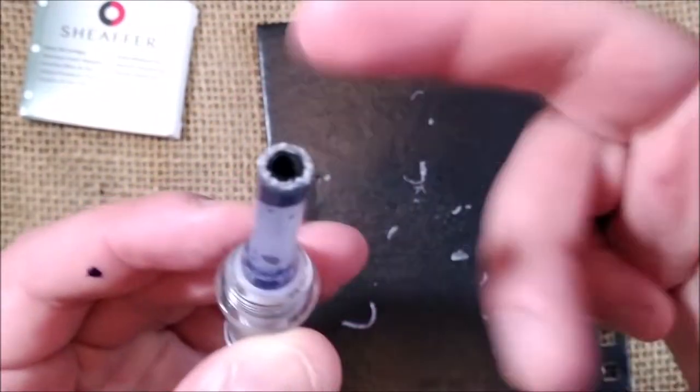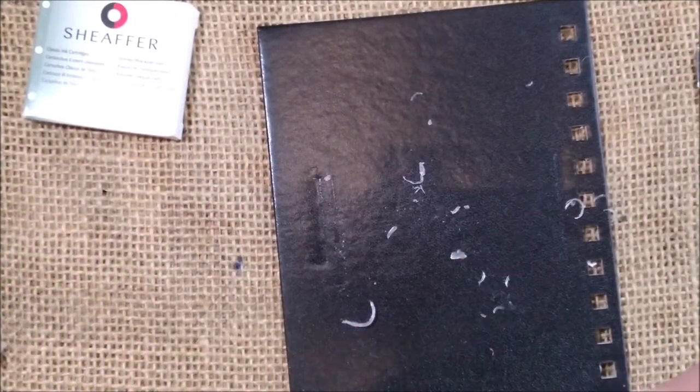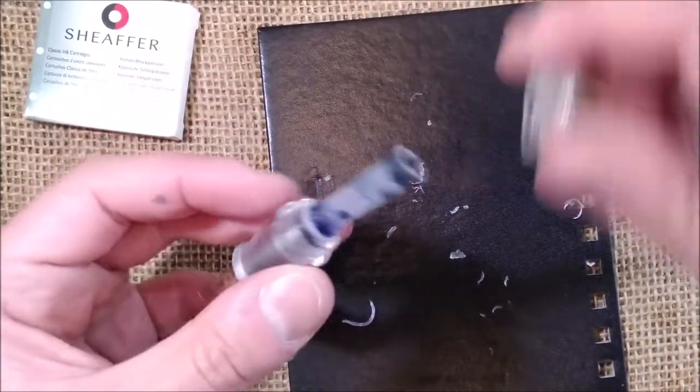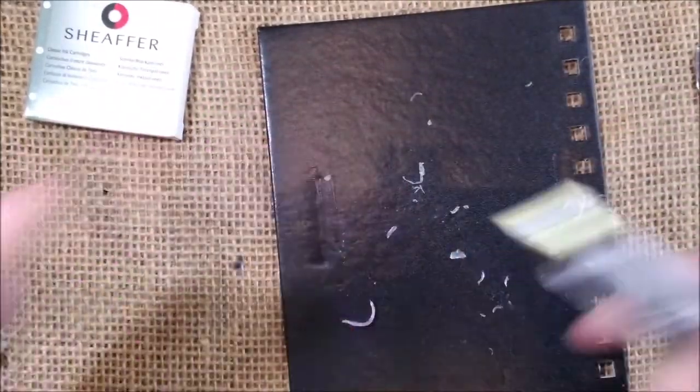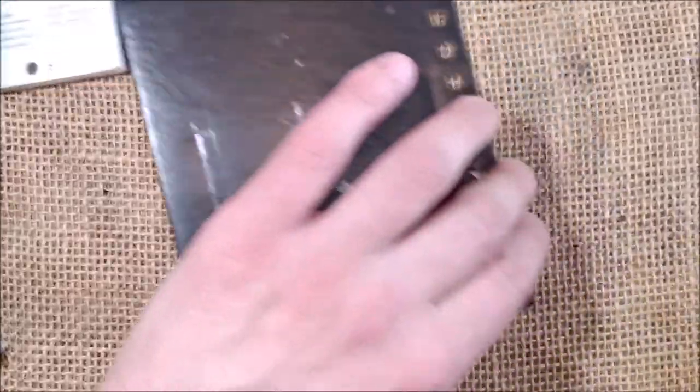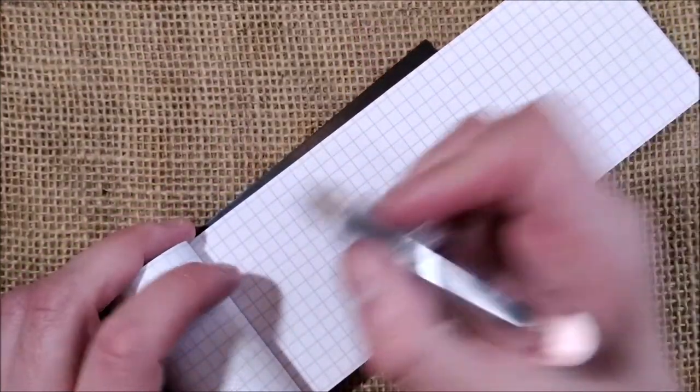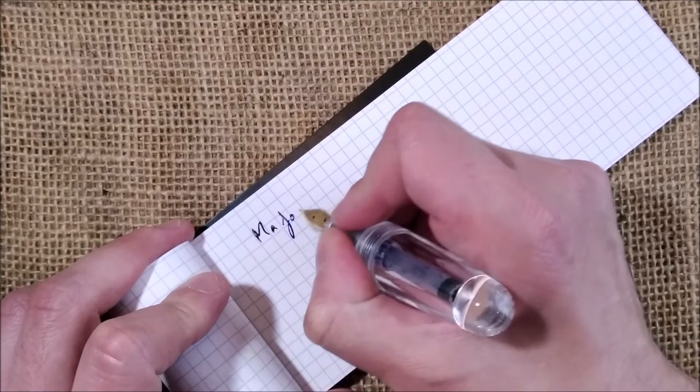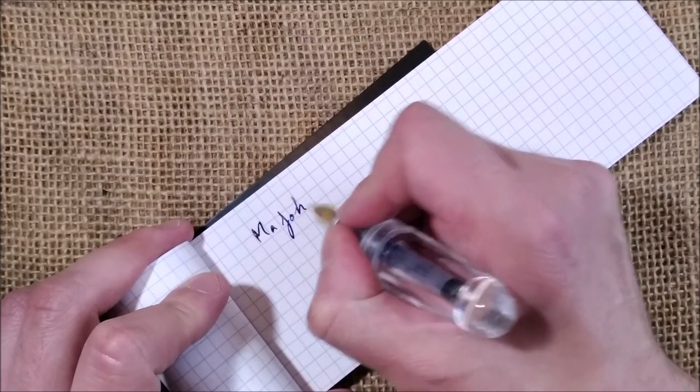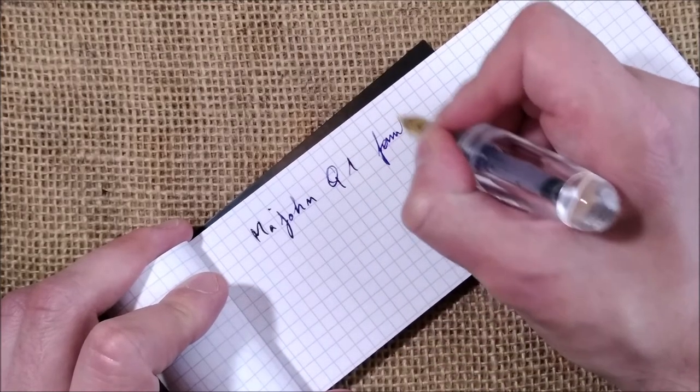Now, with ink, you may need to tap it a little bit for the ink to follow. And then you screw this part and the pen will be ready to write. Maybe not now because I had it uncapped for a long while. But this is the Moonman Q1 fountain pen.